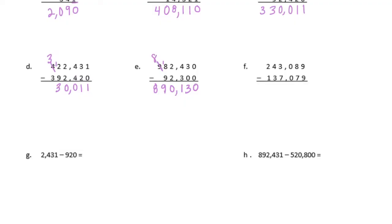F: 9 minus 9 is 0, 8 minus 7 is 1, 0 minus 0 is 0. 3 minus 7 we can't do — I'm going to borrow from the 4, that becomes 3, and this becomes 13. 13 minus 7 is 6, 3 minus 3 is 0, and 2 minus 1 is 1. We have 106,010.